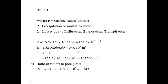The total losses due to infiltration and evaporation equal 103,500 cubic meters. This is how much water loss occurs due to infiltration and evaporation during the process. For Part B, the ratio of runoff to precipitation is R divided by P, where R equals 54,000 cubic meters and P equals 157.5 times 10 to the power 3 cubic meters. The ratio of runoff to precipitation, R divided by P, equals 0.343.